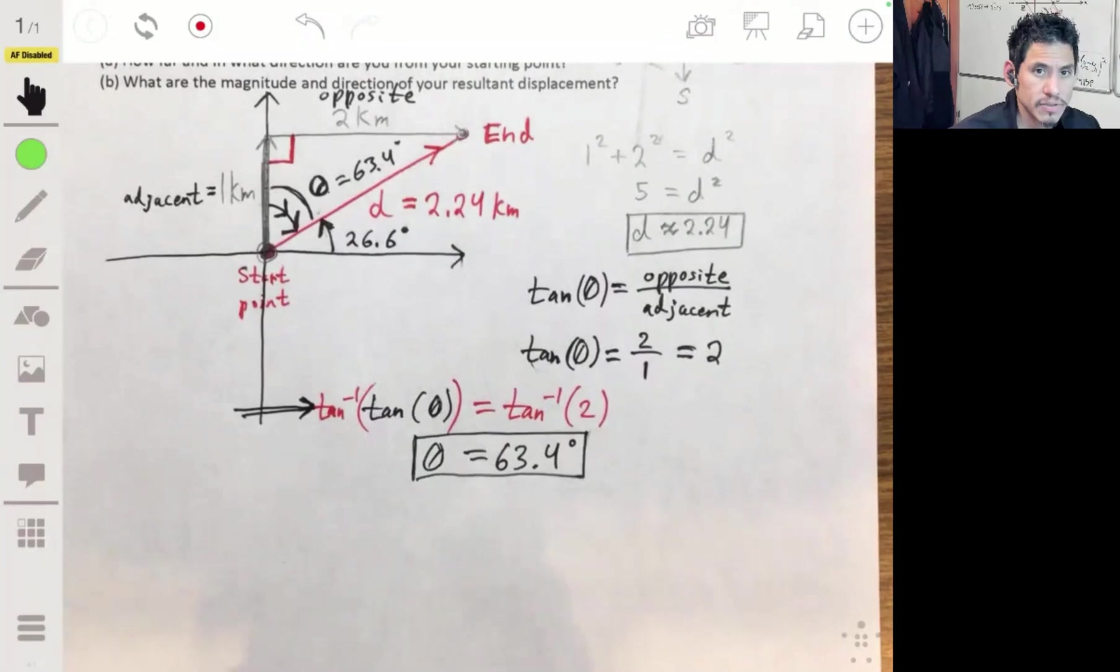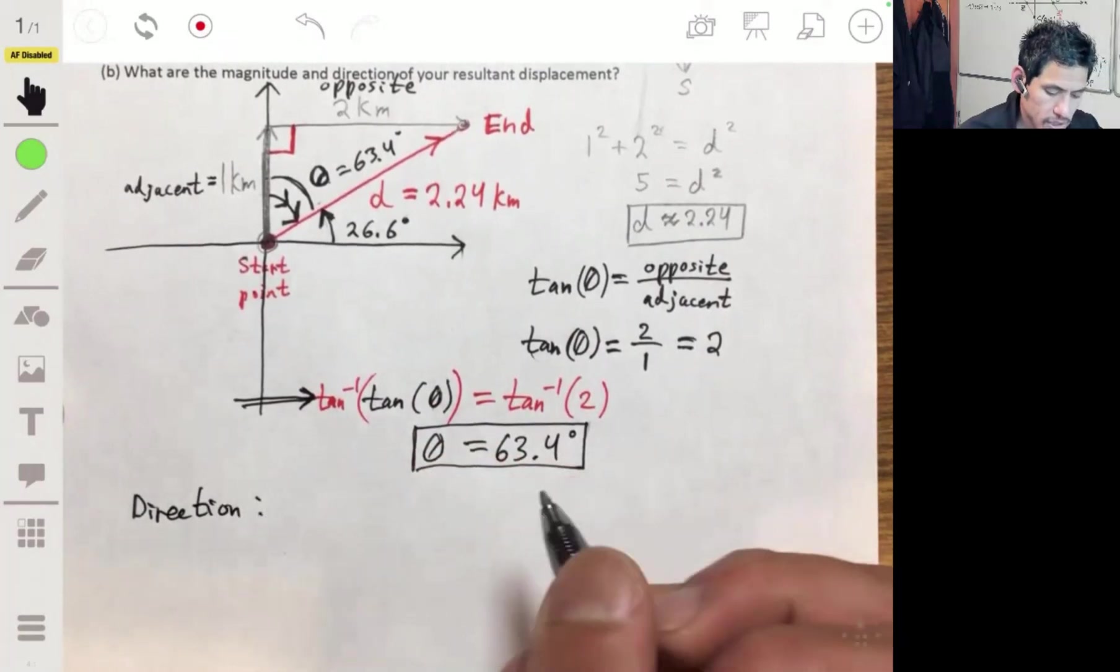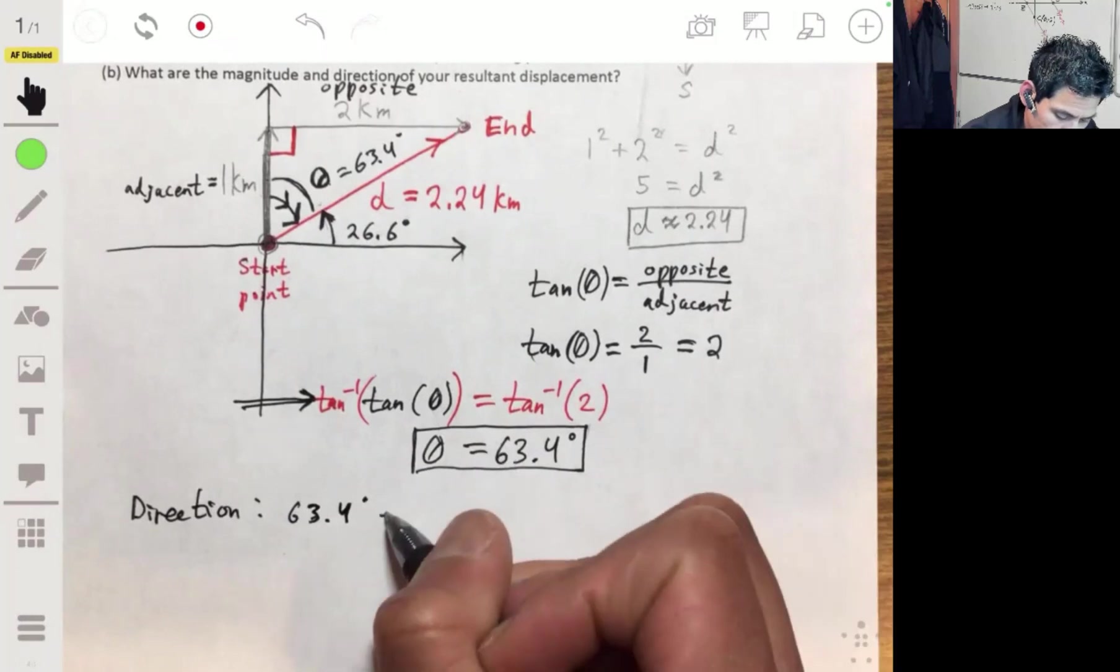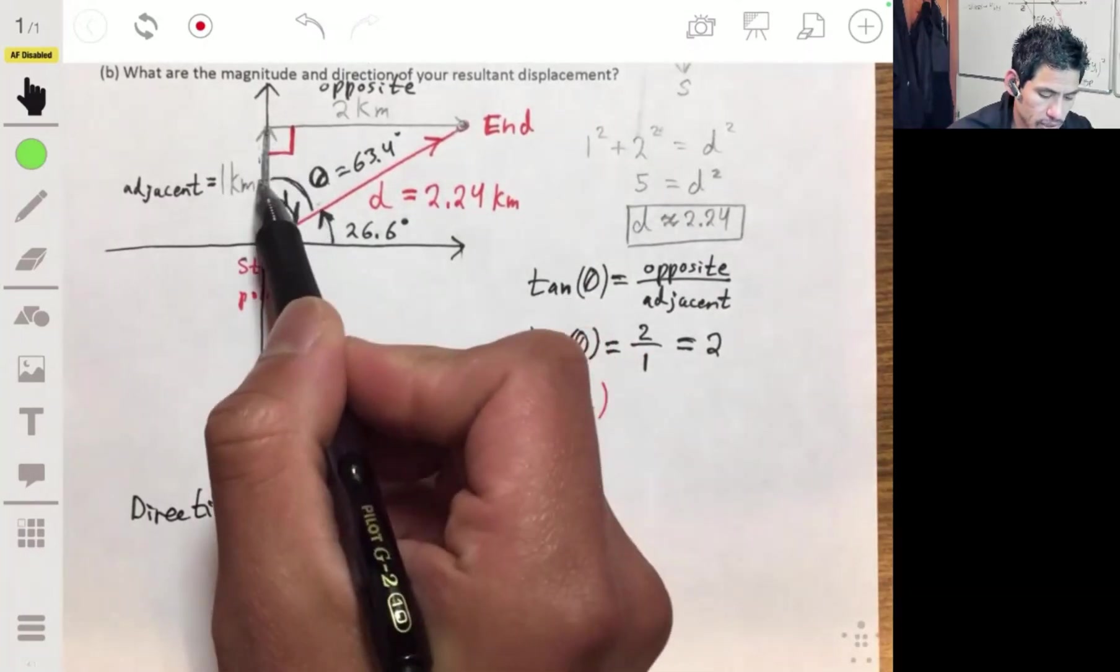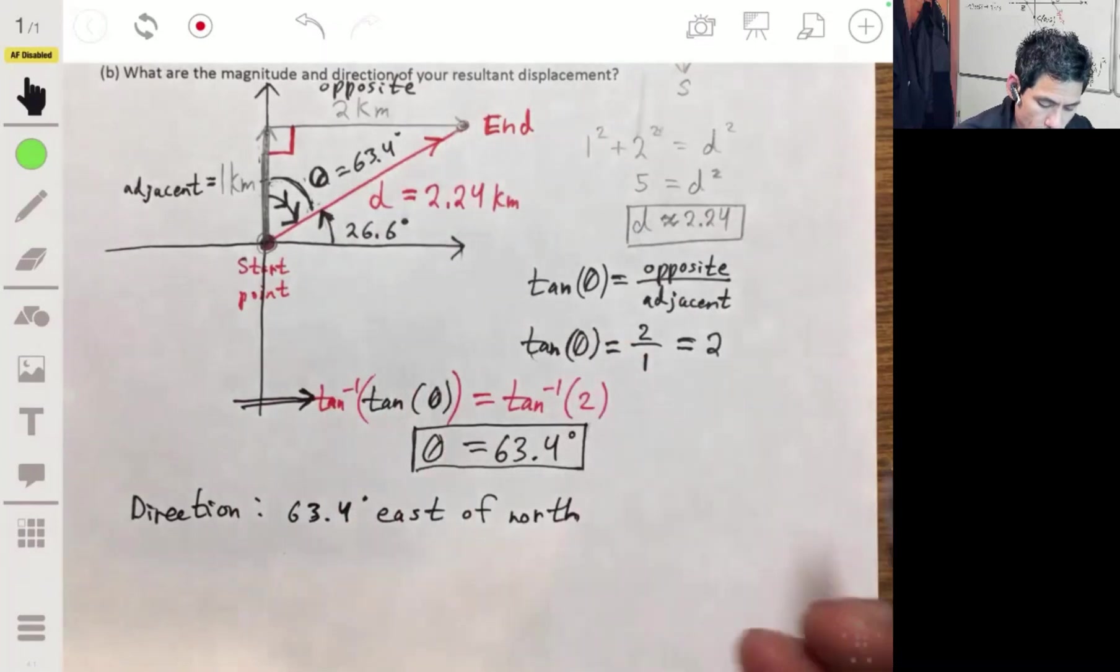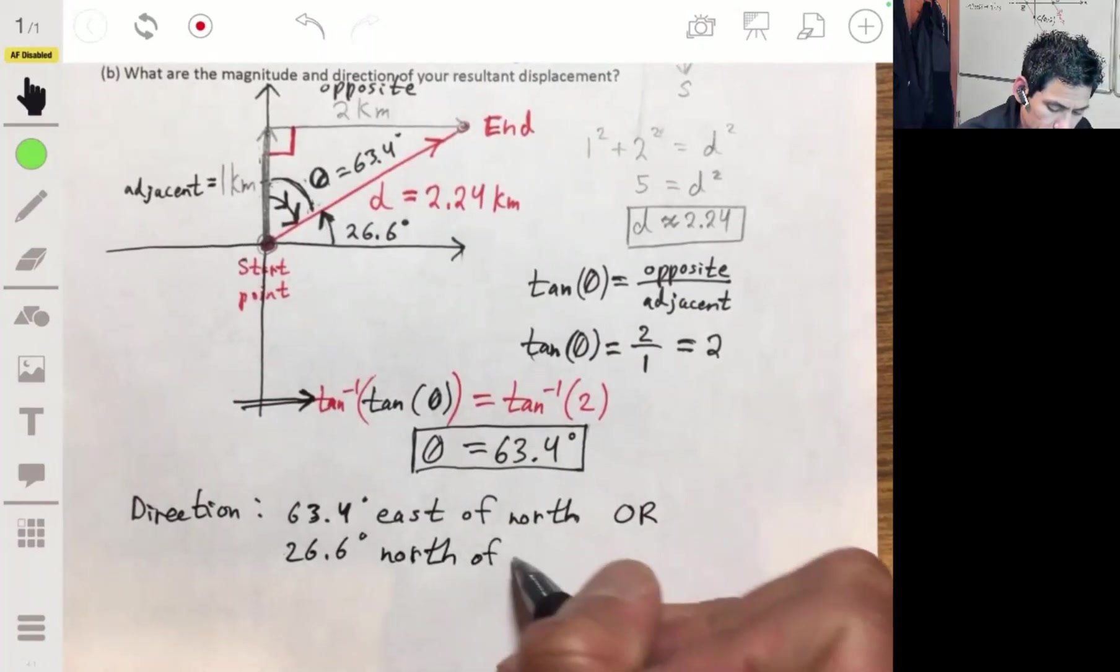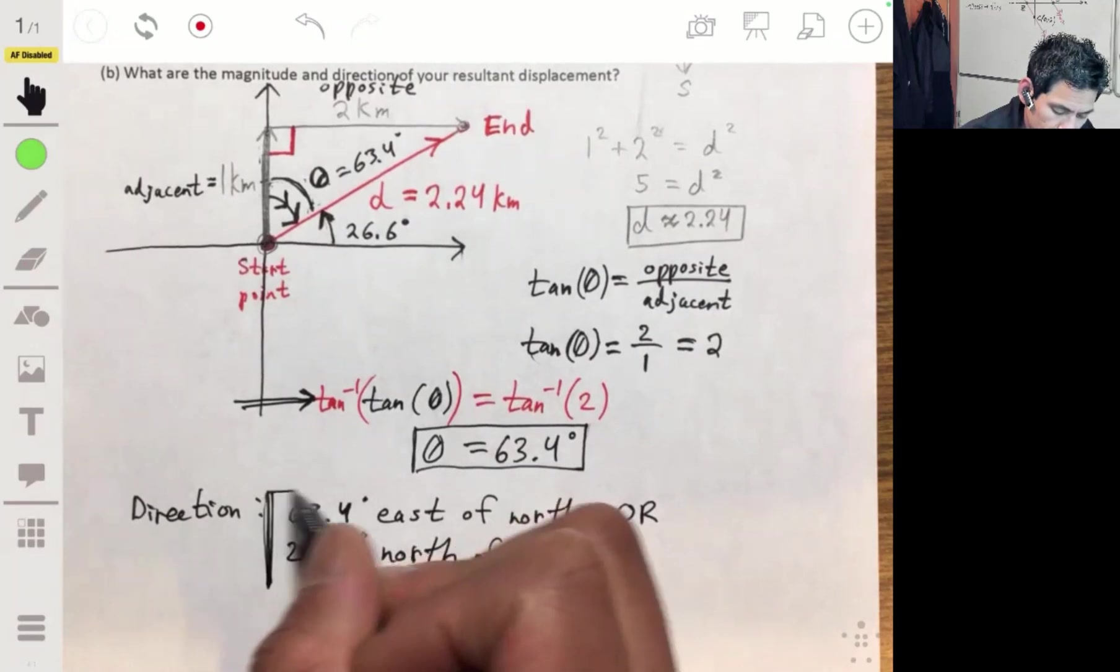So let me write that out so you can see exactly what I mean. 26.6 degrees north of east. Either one is fine. This one, for whatever reason, makes more sense to me, but do whatever makes more sense to you.